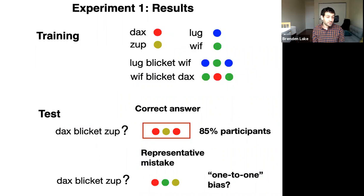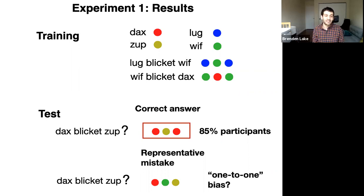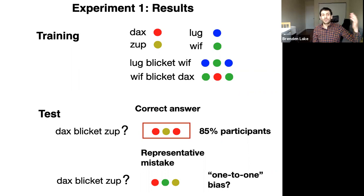Diving into the results in more detail: for the DAX-BLICKET-ZUP trial, with plenty of time, 85% of participants got the right answer (red, yellow, red). The mistakes were quite informative. A representative mistake was red, green, yellow — suggesting many participants had a type of one-to-one bias, assuming each word maps to a single output. They'd map DAX to red, ZUP to yellow, and for BLICKET — not recognizing it as a function — grabbed green from the training set, not realizing BLICKET changes the structure.